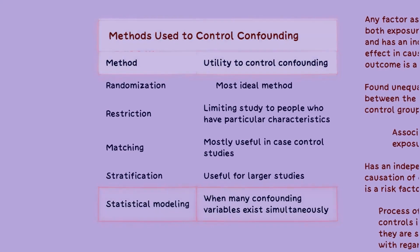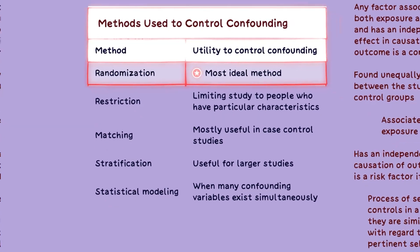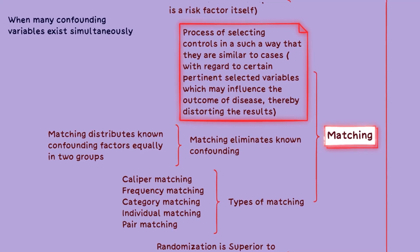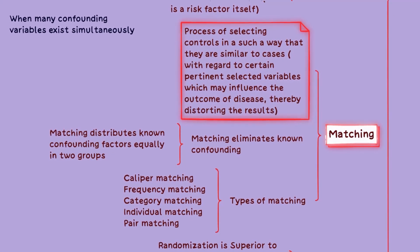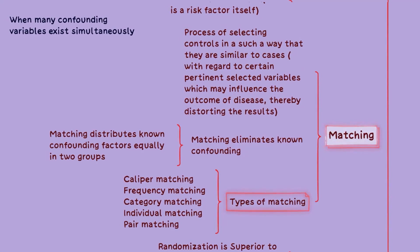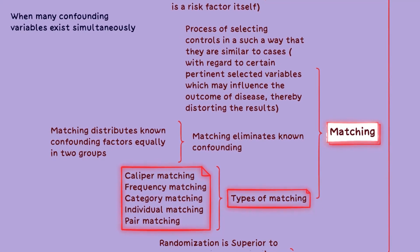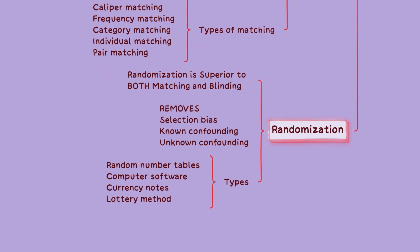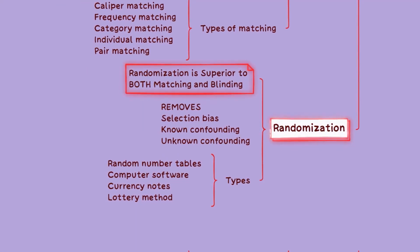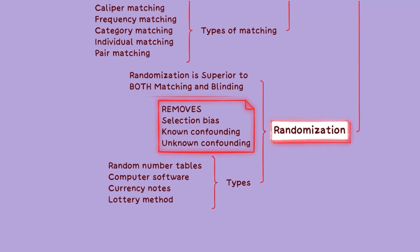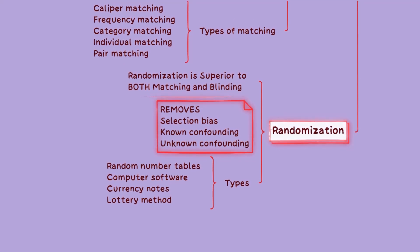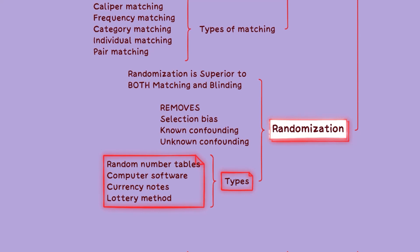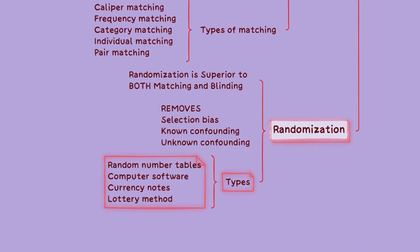Two methods we will discuss in detail are matching and randomization. Matching is the process of selecting controls in such a way that they are similar to cases in terms of certain variables that may influence the outcome. Types of matching include caliper matching, frequency matching, category matching, individual matching, and pair matching. Randomization is superior to matching and blinding in addressing biases — it helps remove selection bias, known confounding factors, and unknown confounding factors. It can be done using random number tables, computer software, currency notes, or lottery methods.